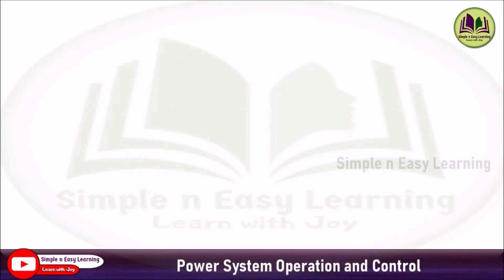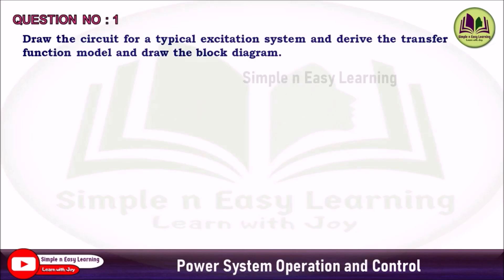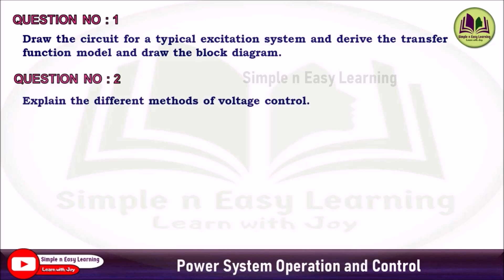Unit 3: Reactive Power and Voltage Control — Question 1 (Priority 1): Draw the circuit for a typical excitation system, derive the transfer function model, and draw the block diagram. First draw and explain the excitation system model, then derive the transfer function, and finally draw the block diagram.